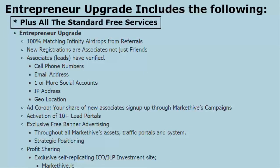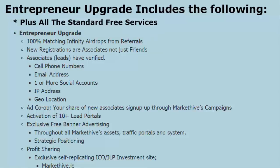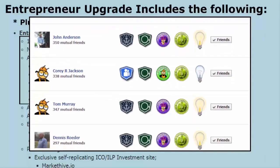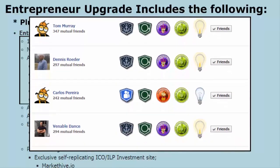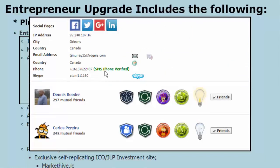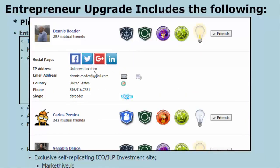With the entrepreneur program, everything you get in free is included, but the program also not only gives you friends, it creates associates for you. In the free version, if you are running referrals to sign up through your profile page or capture page, it's also producing associates for you — you just don't have access to their control panel. In the entrepreneur program, that access is opened up. Your associates are ready for business: you have all the connections to them — their social networks, cell phone, email address, geolocation, and name. It's all verified.